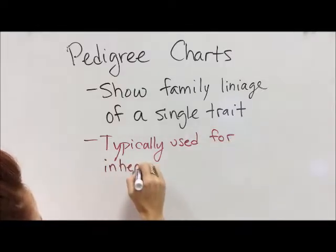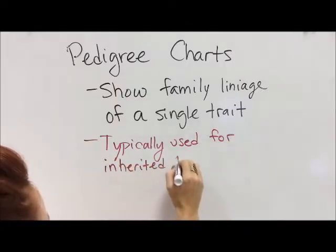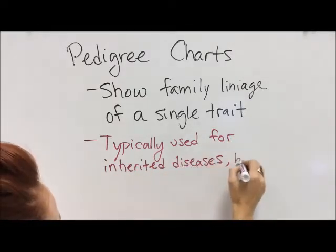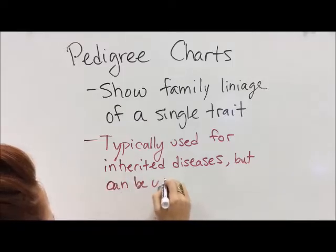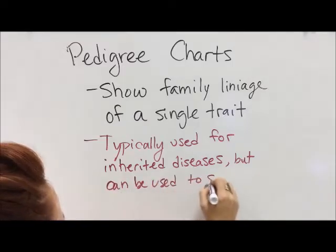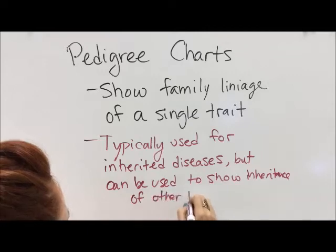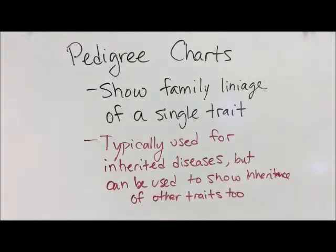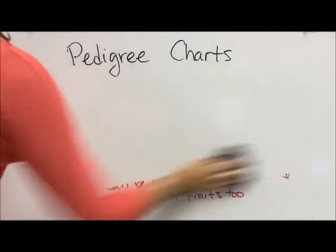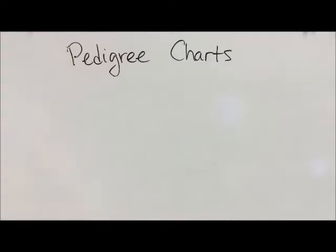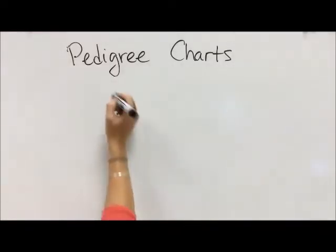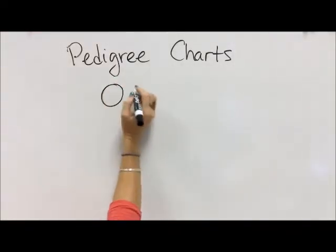Typically these are used for inherited diseases because those are the ones people are really concerned about — seeing what the probability of their child having a certain disease would be. But we can also use them to show the inheritance of other traits too, like hair color or eye color. Basically the charts we're going to draw are going to be of traits of families.